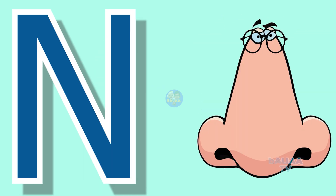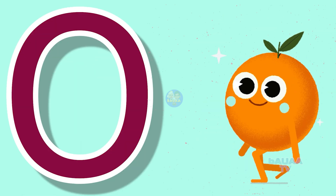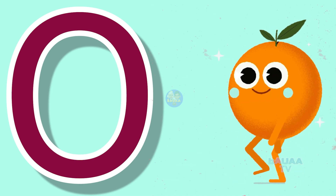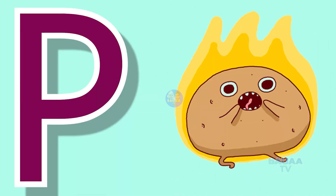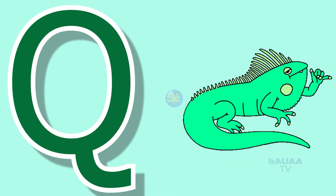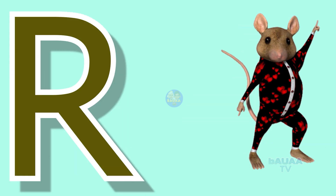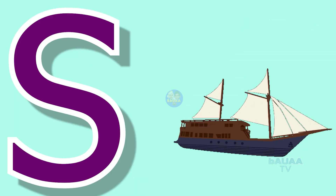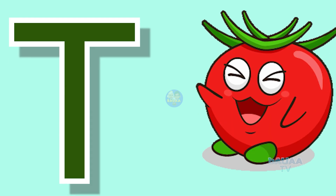N for nose, O for orange, P for potato, Q for quill, R for rabbit, S for sheep.